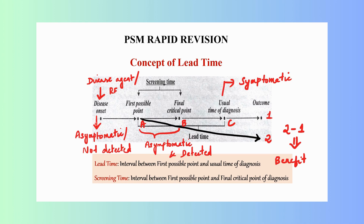Let's consider the example of diabetes mellitus. At the level of disease onset, the person will have risk factors for diabetes such as overweight and physical inactivity. The risk factors are present but the person is asymptomatic, and you are not able to diagnose the disease at this stage.